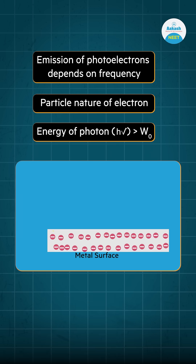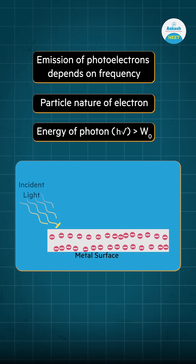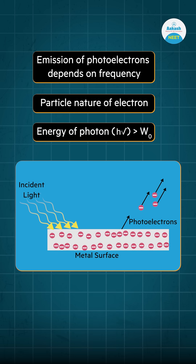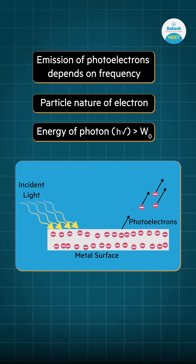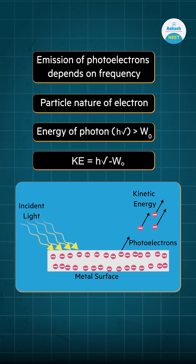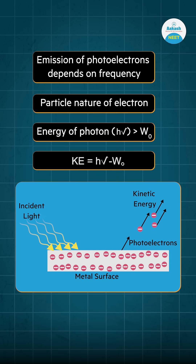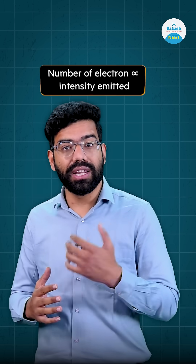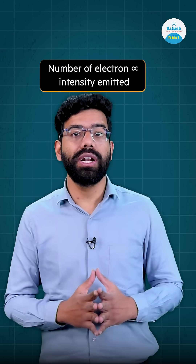If a photon has higher energy than the work function, the remaining energy after overcoming the barrier is converted into the kinetic energy of the emitted electron, which is known as a photoelectron.